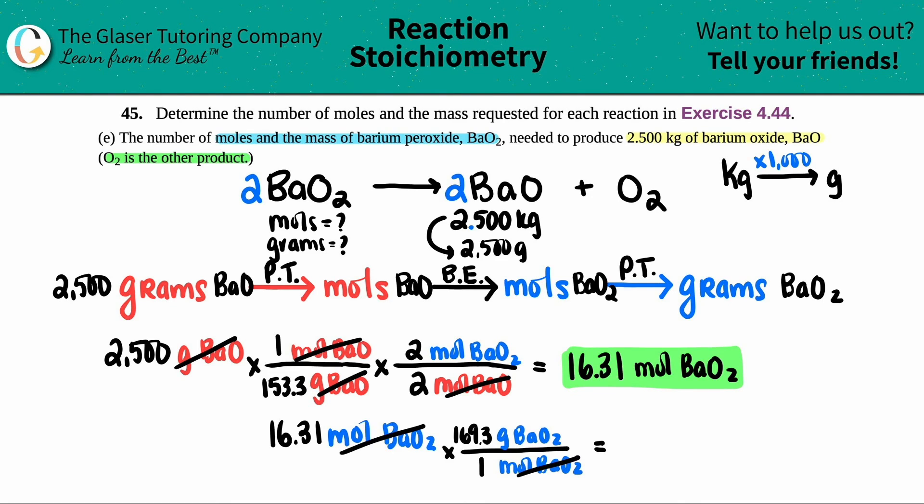So 16.31 times, they're both in the numerator, 169.3. I got to keep to the four sig figs. So I'm just going to say 2,761 grams of BaO2. And just remember that the mole value, the 16.31 moles of BaO2 that we found, is the same amount as 2,761 grams. They're equivalent to each other, just different units.